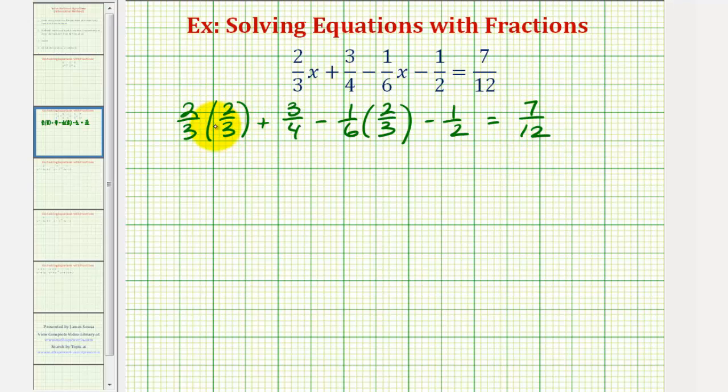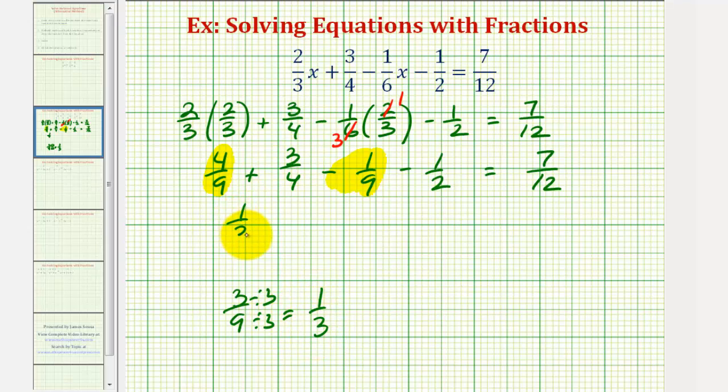So this first product would be 4/9, plus 3/4, minus, here this does simplify. There's 1 two in 2 and 3 twos in 6, so we have minus 1/9, minus 1/2 equals 7/12. Well, 4/9 minus 1/9 would be 3/9, and 3/9 simplifies nicely to 1/3. So we'd have 1/3 plus 3/4 minus 1/2 equals 7/12.